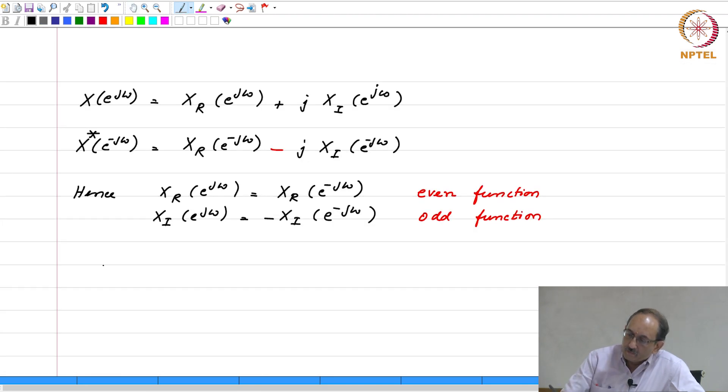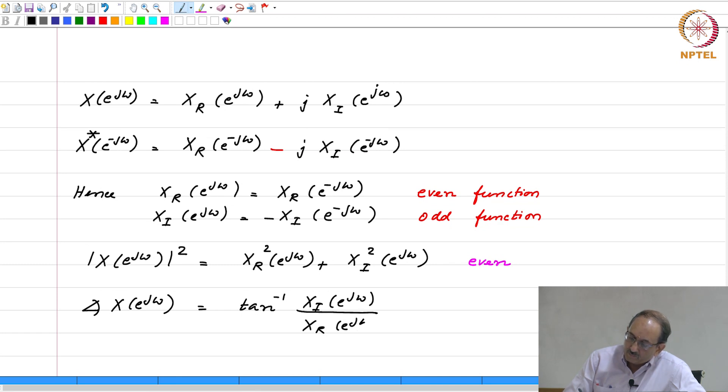And hence, if you look at magnitude, magnitude squared, this is and this again is even because square of an even function is even, square of an odd function is again even. And, the angle is tan inverse X_i by X_r and this is odd. The ratio of odd to even is odd, tan inverse is an odd function. Therefore, this is odd.